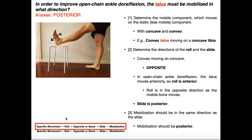The gist of it is: if we're given a specific movement — for example, open chain ankle dorsiflexion — we can follow a process to figure out the direction of the roll, figure out if the slide should be in the opposite or same direction, and from there determine the direction we need to mobilize that joint in order to improve the mobility of that particular movement.